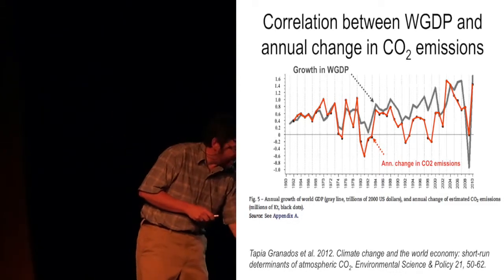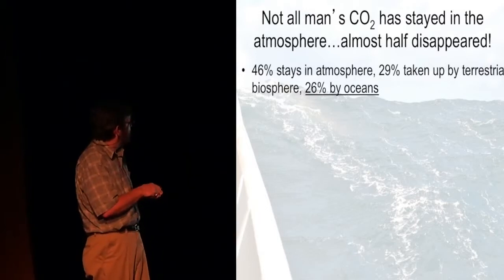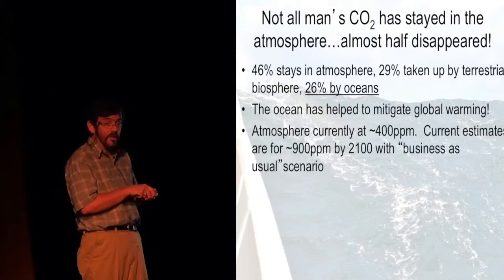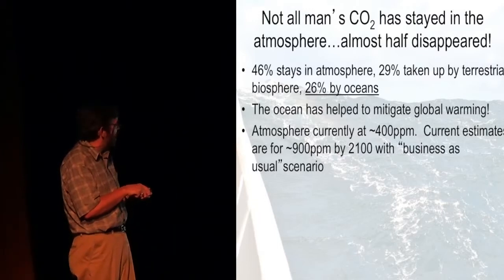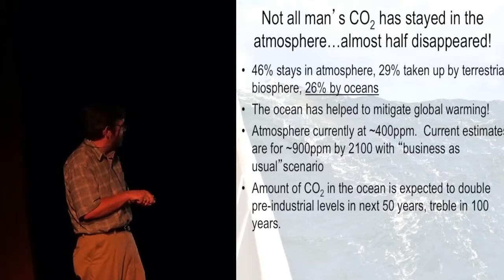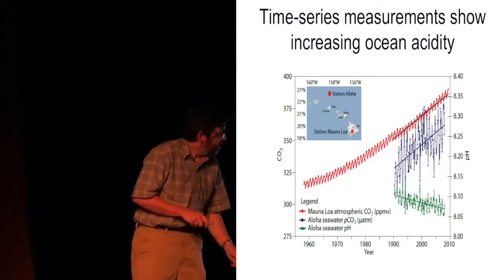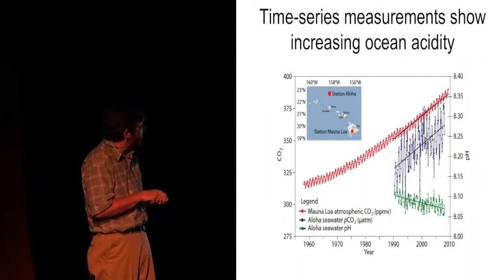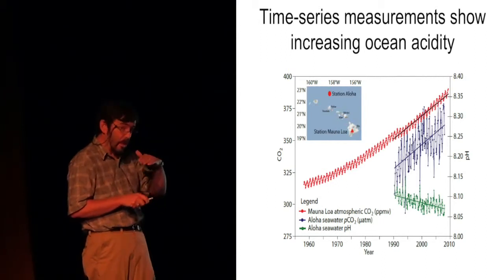So not all man's CO2 has stayed in the atmosphere. Almost half of it has disappeared. Of the 46%, it stays in the atmosphere. 29% is taken up by terrestrial biosphere. And 26% by the ocean. So the oceans have helped to mitigate CO2 climate change. So we're at 400 parts per million. The current estimates are for 900 parts per million by 2100 with the business as usual scenario. And the amount of CO2 in the ocean is expected to double the pre-industrial levels in the next 50 years. And when you add CO2 to water, it makes carbonic acid acidifying the sea, which is not good if you're a shell former. So here's the same Mauna Loa curve. From and out at Station Aloha, they're measuring the CO2 in the water. And you notice, these are the same units. Notice that the slopes are equal. And also, this is pH here in green. And you can see the pH is going down over the 20 years.